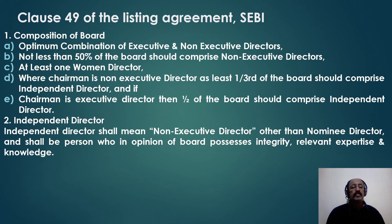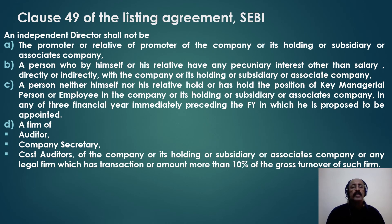To clarify: if the chairman is a non-executive director — meaning he is not a promoter — then 33% independent directors are required. If the chairman is an executive director — meaning he is a promoter — 50% of the board should be independent directors. Independent directors should also have knowledge, expertise, and skills in relevant areas; especially if heading the audit committee, they should have knowledge in accounting and financial management. Clause 49 also states that an independent director shall not be a promoter or relative of the company or its holding, subsidiary, or associate company, and neither he nor his relative should have any pecuniary interest in the company.